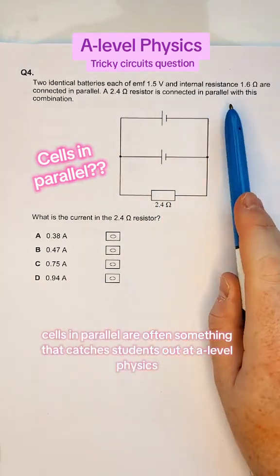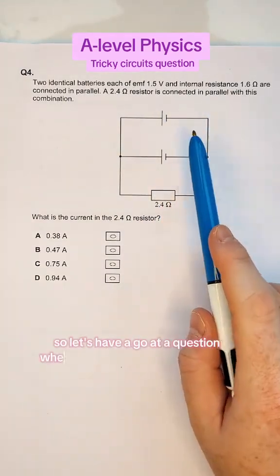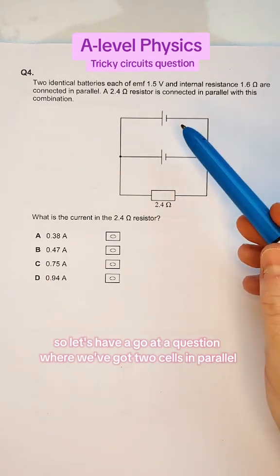Cells in parallel are often something that catches students out at A-level physics. So let's have a go at a question where we've got two cells in parallel.